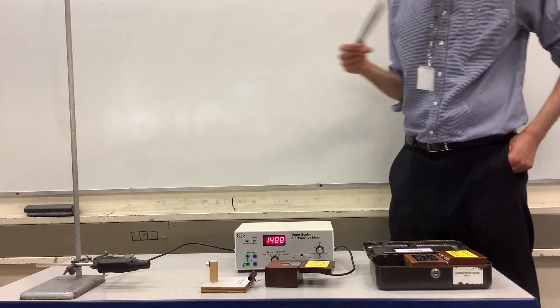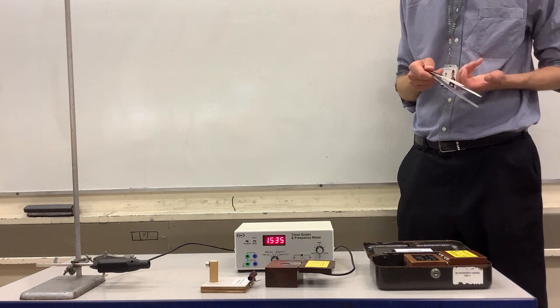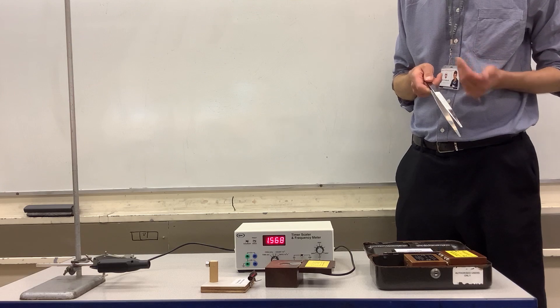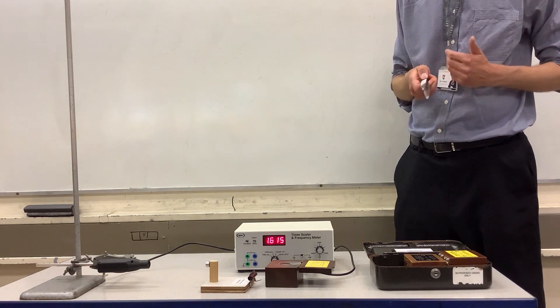And already we can see that with the source some distance away from the detector, the GM tube, that we're detecting quite a lot of beta radiation coming from the strontium-90.